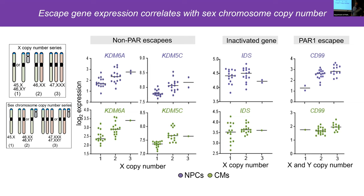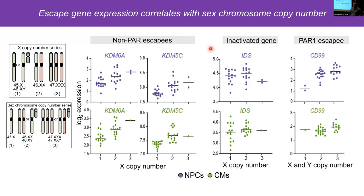Escape genes often scale with copy numbers. We grouped them by X copy number — one X versus two versus three — and by sex chromosome copy number series. Well-known escape genes like KDM6A and KDM5C generally track well with X chromosome dosage, further highlighting that they escape. In contrast, the IDS gene — an inactivated gene — is flat across comparisons and doesn't track with X chromosome dosage, which is expected since it is inactivated. The PAR gene CD99 tracks well with sex chromosome dosage in both NPCs and cardiomyocytes.